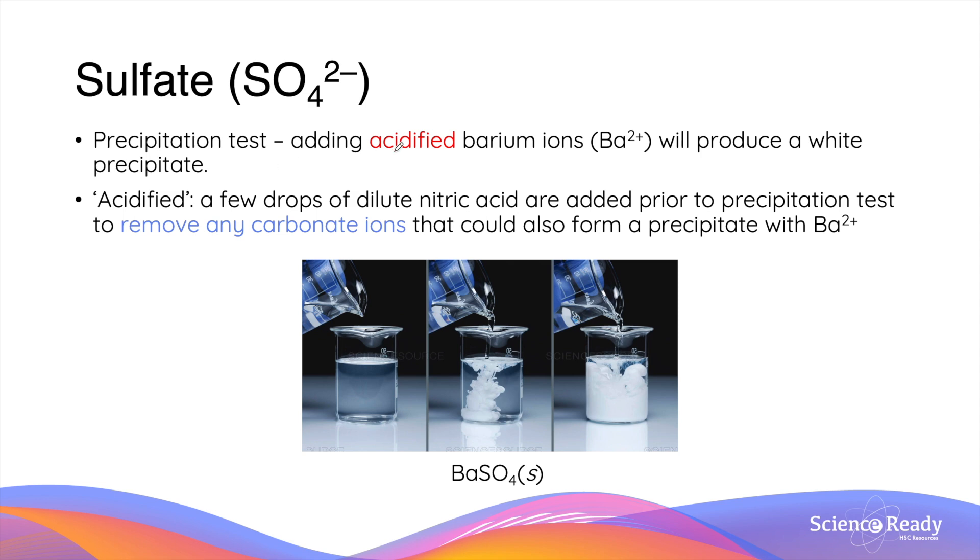Sulfate ions can be identified by adding acidified barium ions to produce a white precipitate that is barium sulfate. It is important to add an acidified solution of barium ions because a few drops of diluted nitric acid is required prior to precipitation to react with carbonate ions that could be potentially in the solution. If the solution doesn't contain acid, any presence of carbonate will also react with barium ions to also give you a white precipitate. In that case, it is impossible to tell whether the white precipitate is barium sulfate or barium carbonate.